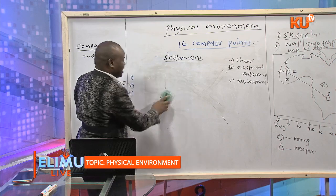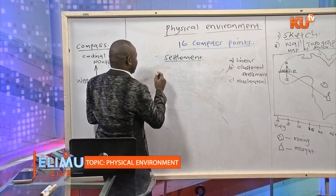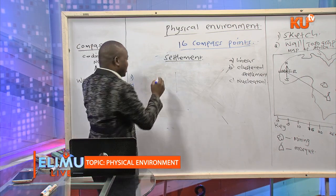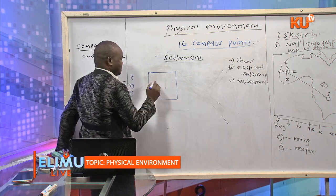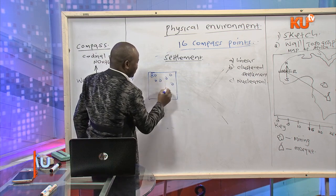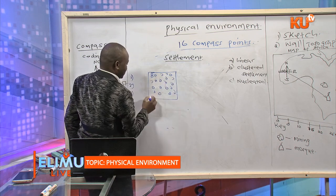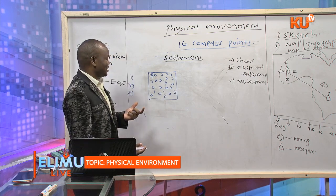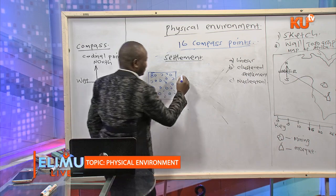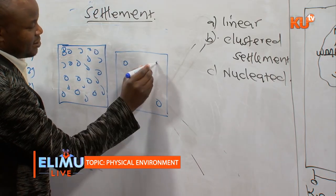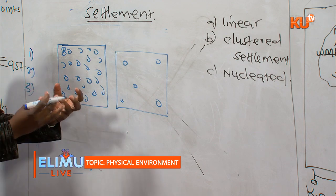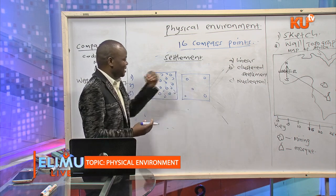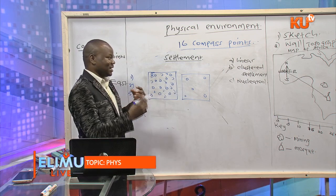Population distribution can be described as densely populated, where population is found everywhere, or sparse, where people are not concentrated at one point. When a question asks which type of population is found in an area, it can be sparse, dense, linear, clustered, or nucleated — and these settlements are influenced by different factors.